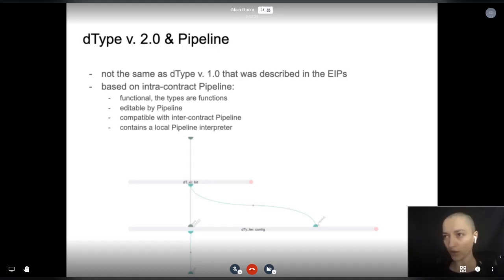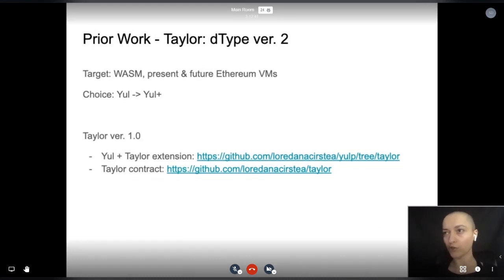I'm now introducing Taylor, a suite of Yul+ extensions for using dType as a type system and Pipeline as an interpreted language. Our target is compatibility with WASM, with Web Assembly and with any Ethereum VM. Therefore we chose Yul for our tech stack, and then we found about Yul+.